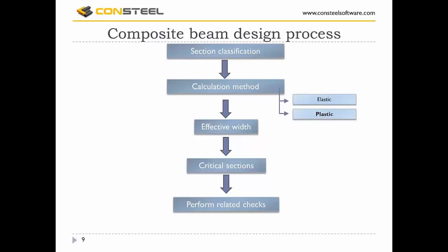Some basics about the theory of designing composite beams. These are the main steps of the design process. The first step is section classification, which is very similar to steel cross-section classification. This determines the calculation method, which can be elastic or plastic. The next step is to define the effective width of the concrete flange which interacts with the steel section, and after that we define critical sections with related checks to perform.